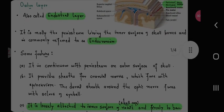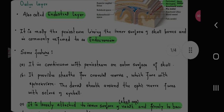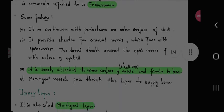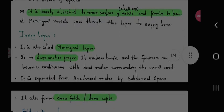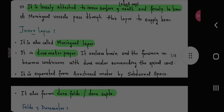Outer layer, also called endosteal layer. It is really the periosteum lining the inner surfaces of skull bones and is commonly referred to as endocranium. Some features: it is continuous with periosteum on outer surface of skull. It provides sheaths for cranial nerves which fuses with the epineurium. The dural sheath around the optic nerve fuses with the sclera of eyeball. It is loosely attached to inner surface of the skull cap vault and firmly to the base.